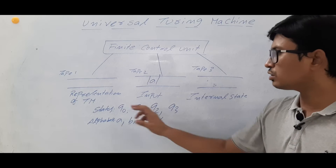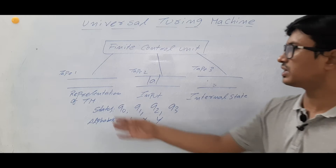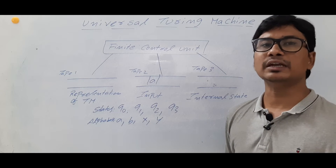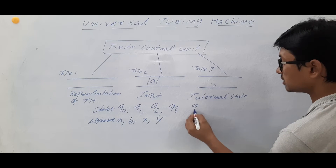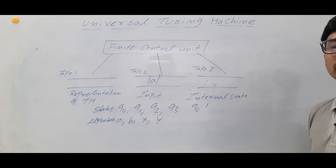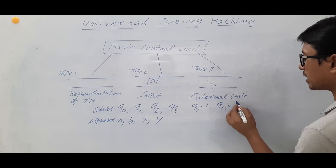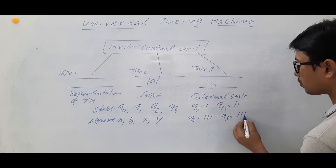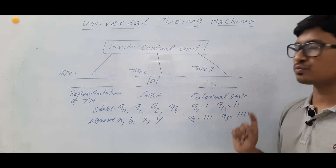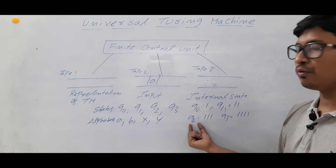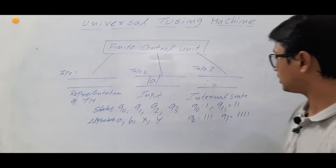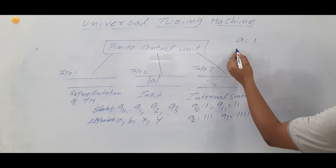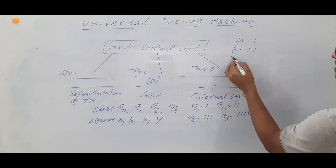We can represent the Turing Machine with its transition rules. Now, how will I represent the states? We can only store ones or zeros, so we cannot store Q0, Q1 directly. So I will perform an encoding operation. My assumption is: Q0 will be encoded as '1', Q1 as '1 1', Q2 as '1 1 1', Q3 as '1 1 1 1', and so on. Similarly, for alphabets: A is encoded as one 1, B as two 1s, X as three 1s, Y as four 1s.